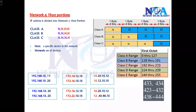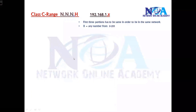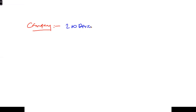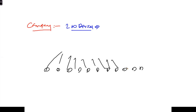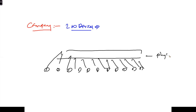In the previous topic we covered network portions — in A class one portion has to be the same, in B class two network portions have to be same, and in C class three network portions have to be same. Let's take an example: say you have around 200 devices in your network. The physical connectivity is done — all devices are connected through a switch. But simply connecting devices physically is not enough; you also need to assign IP addresses.